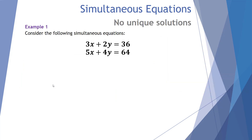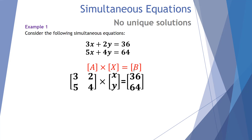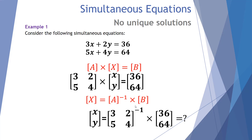Example number one: consider the following simultaneous equations. We have this in a general format of a coefficient matrix A, an unknown matrix X, and an end result matrix B. Our Xs are represented in the first column of the coefficient matrix — that's the 3 and 5. Our Ys are represented with the 2 and 4. The unknowns X and Y are in the second matrix, and our results, 36 and 64, are in the final matrix B. We find the unknown matrix X by multiplying the inverse of A by matrix B, giving us X equals 8 and Y equals 6.